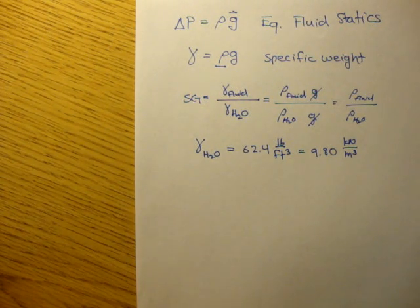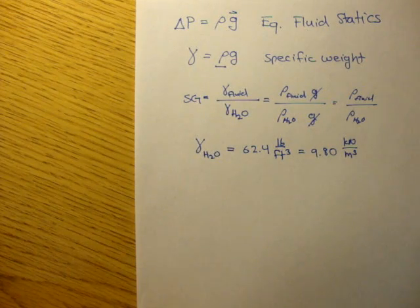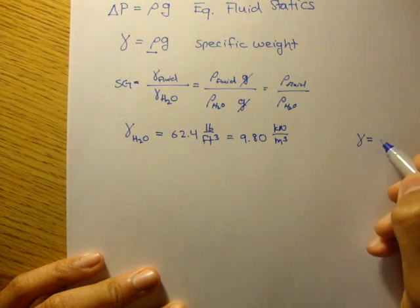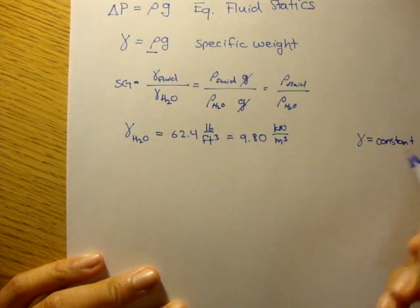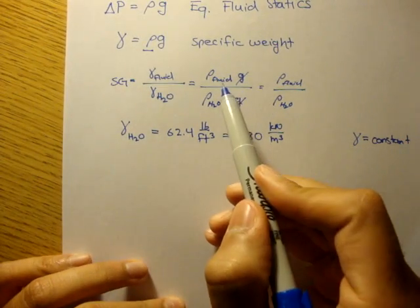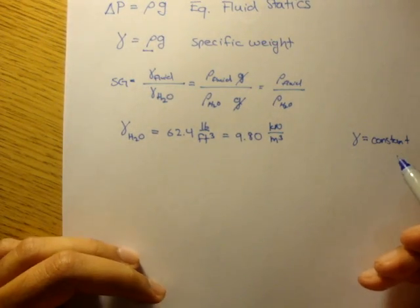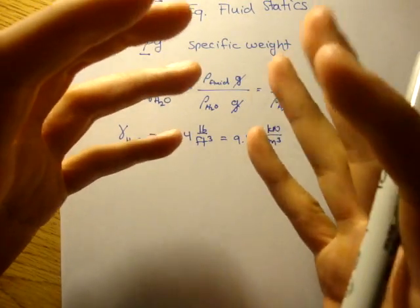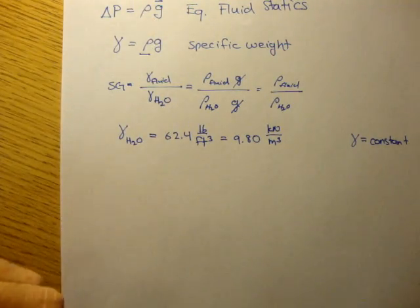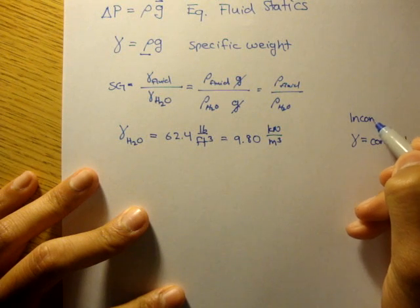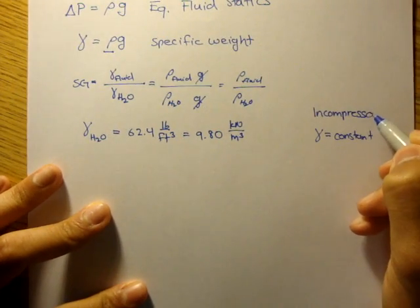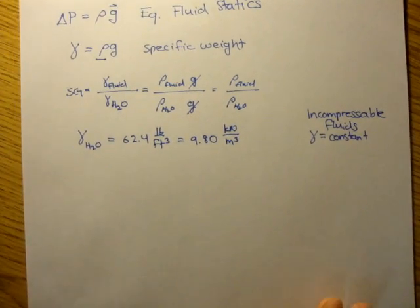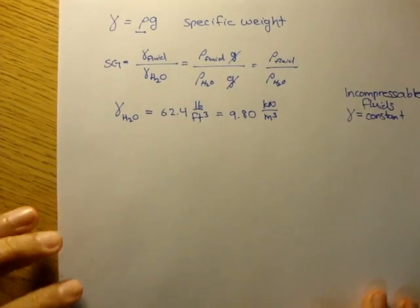Now, we're going to be studying incompressible fluids for a while. And all incompressible fluids mean is that gamma is equal to a constant. Or, the specific weight, the density of the fluid we're studying, doesn't change. So, we can't compress water. However, we can compress air, or a gas. So, just from here on out, we're studying incompressible fluids.